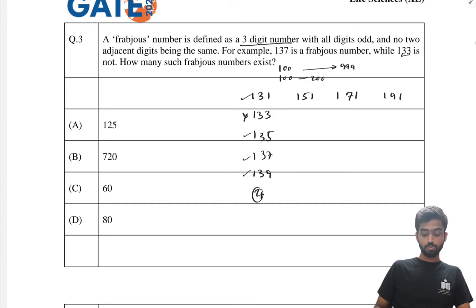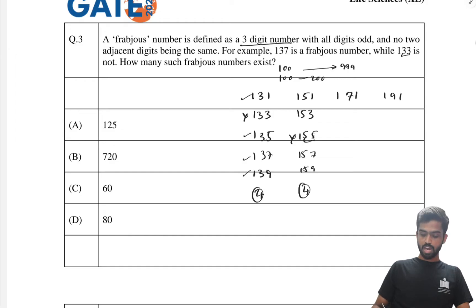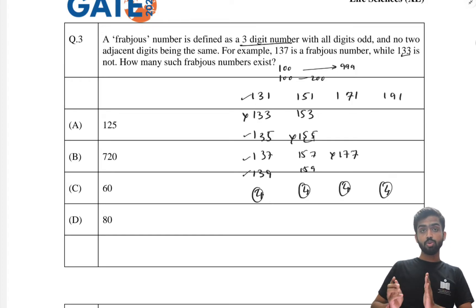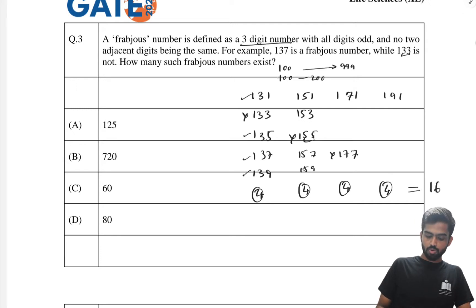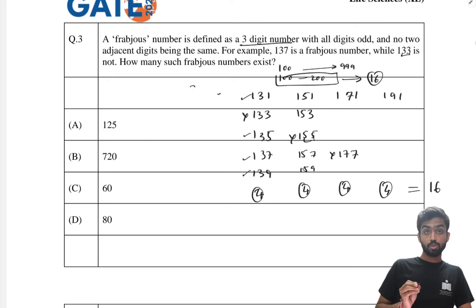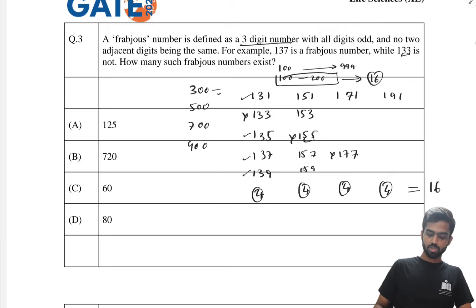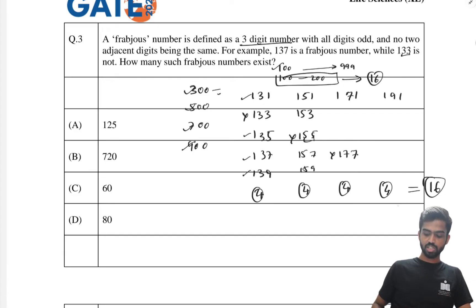In the 151 series: 153, 157, 159 are valid — 155 is not because 5 and 5 are adjacent. Similarly in the 171 series, 177 is excluded, leaving four. So from 100 to 200 we have 16 fraptious numbers. The same logic applies to the 300, 500, 700, and 900 series — five hundreds each with 16 numbers gives us 5 × 16 = 80. The answer is 80.